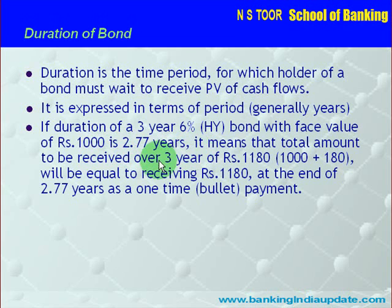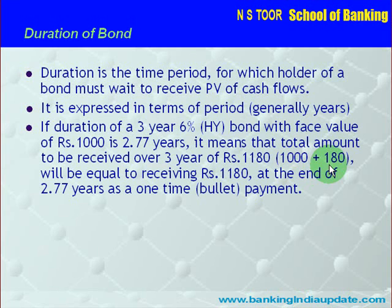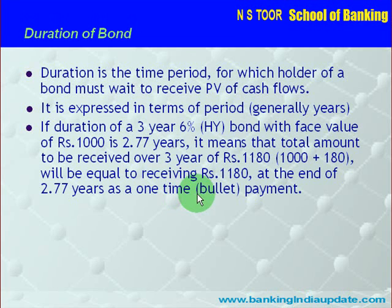It means that total amount to be received over these 3 years would be Rs. 1180 — Rs. 1000 the face value to be received on maturity and Rs. 180 amount of coupons to be received in 3 years. So it means that total amount of Rs. 1180 will be just equal to receiving Rs. 1180 at the end of 2.77 years as one lump-sum payment, which is called bullet payment.